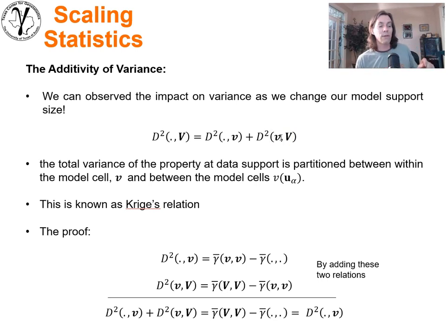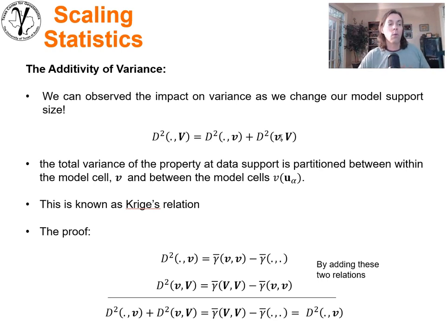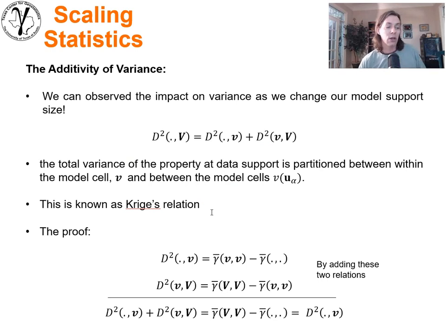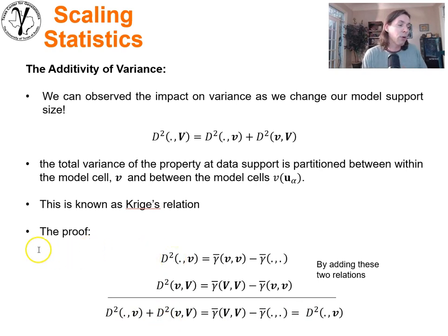As we make our model cells larger, more of the variability is tucked into the model cell and less is expressed between the model cells — but there's conservation of that overall variance. What we hide within the cell, we lose between the cells, so there's a partitioning of variance between what's inside the cell and what's between them. This relationship is known as Krige's relation. To solve for it, we simply expand the dispersion variance definitions for (point, v) and (v, V) and add the two systems together; it simplifies very quickly to Krige's relation.